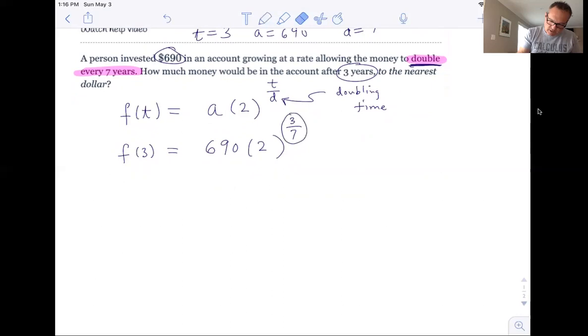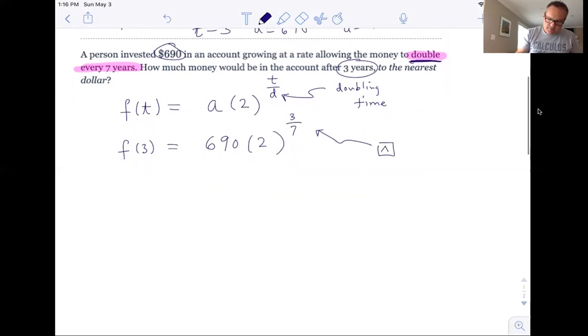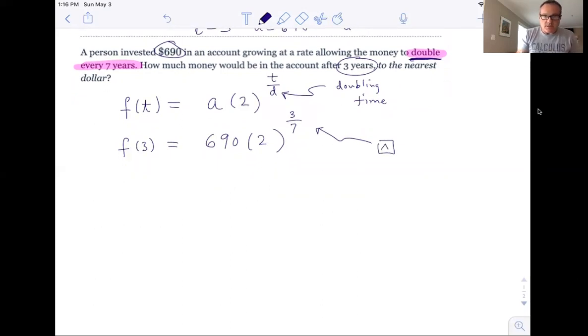Just make sure that this remains the exponent. Actually, I don't really want to circle it, but make sure that remains as the exponent. And of course, the operation on your calculator to get an exponent is that up caret key. Make sure to use that. So if I plug this in to the nearest dollar, this is going to shake out to be about $929.